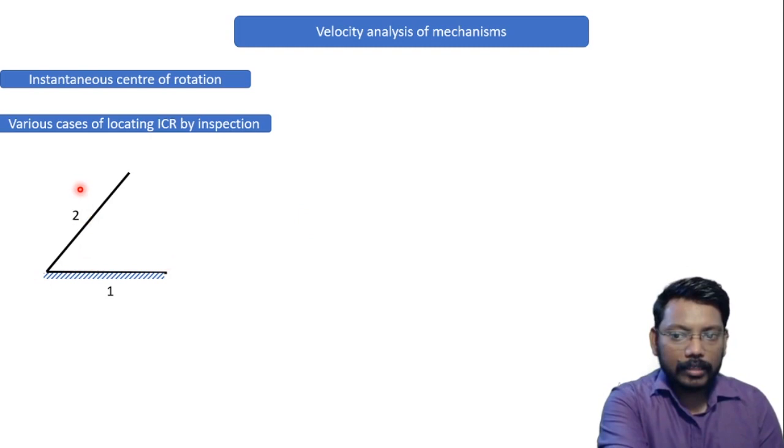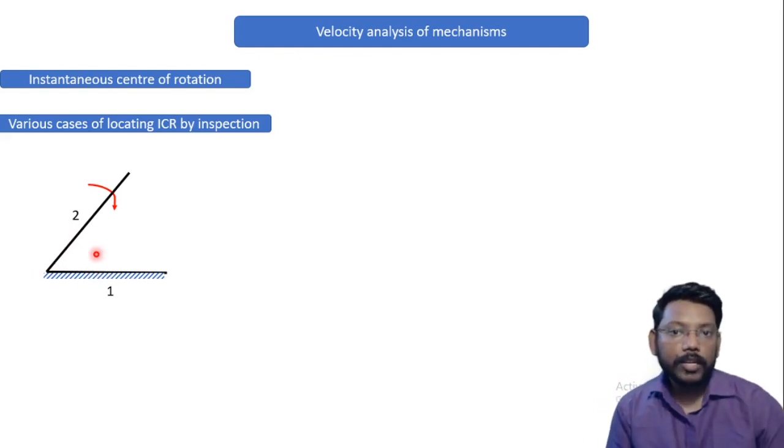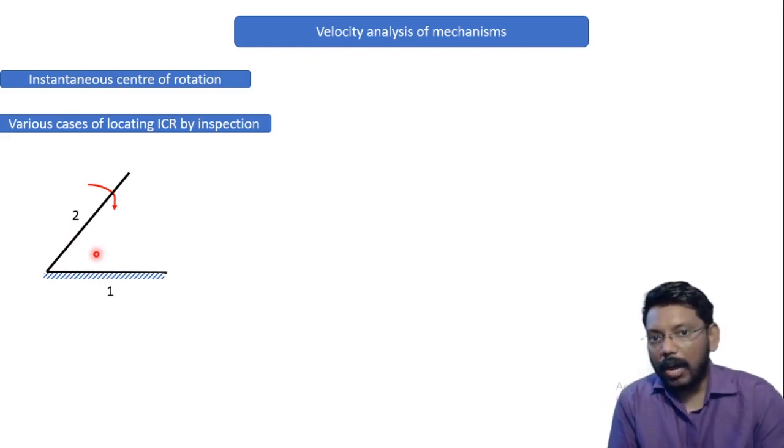So this link number two can actually rotate around this particular point, also connected to link number one. Now we call this a turning pair. Whenever we are having a turning pair and if you have visual inspection, you can easily locate ICR.